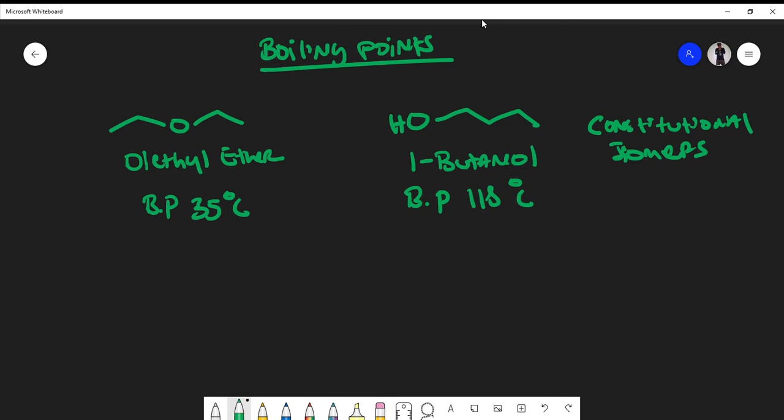You may be wondering why does 1-butanol have such a high boiling point in comparison to diethyl ether? It's because of hydrogen bonding. 1-butanol possesses hydrogen bonding while diethyl ether does not.